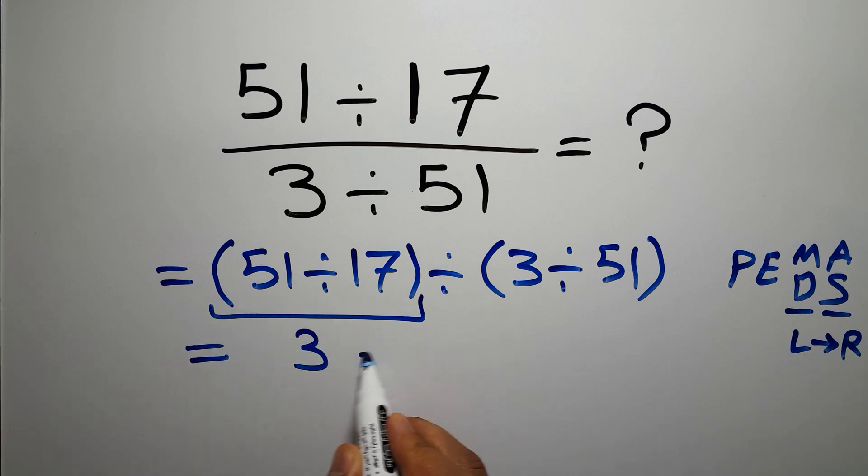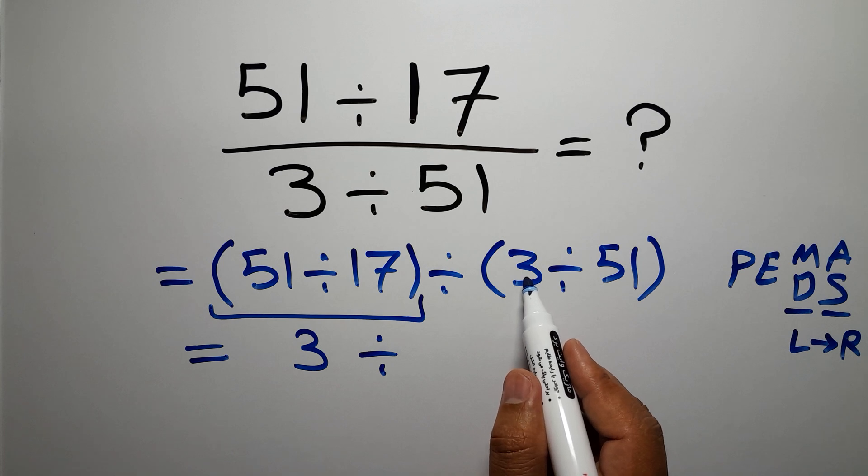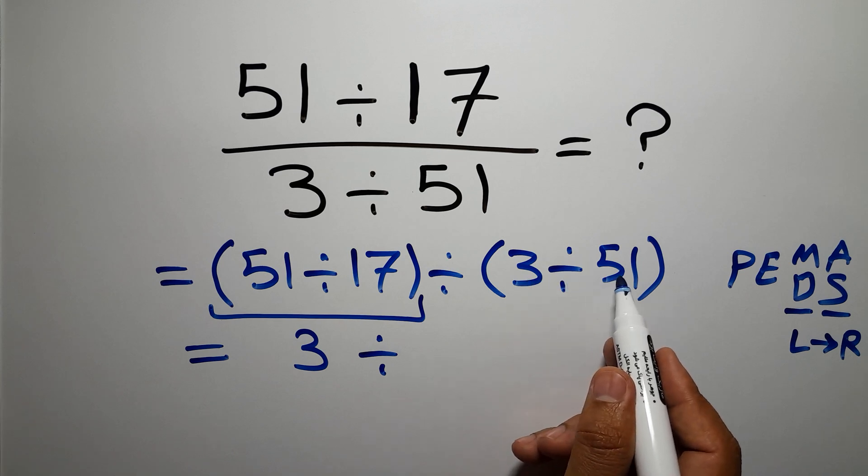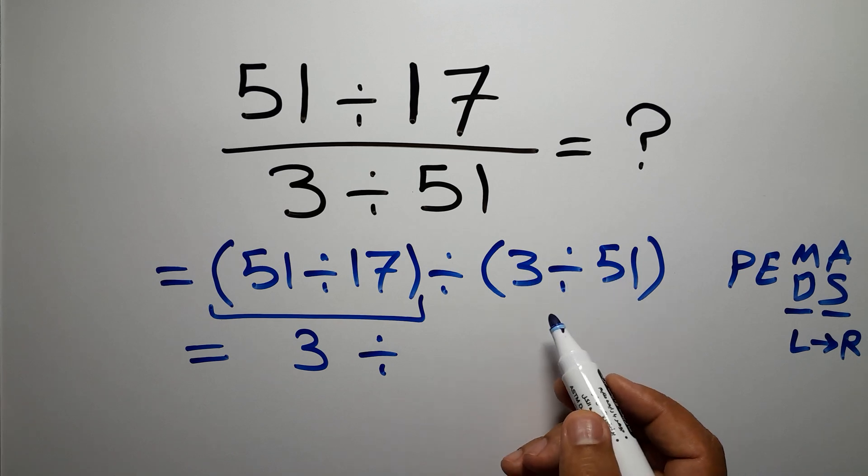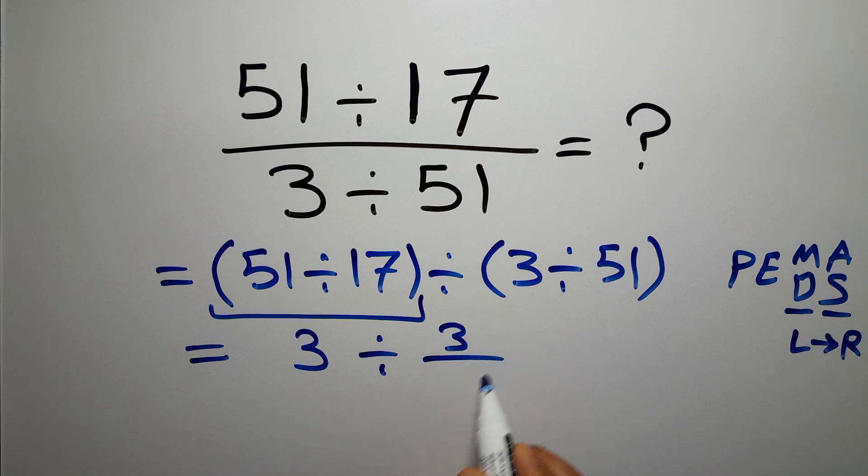So 3 divided by these parentheses. Inside these parentheses, we have 3 divided by 51. We can write 3 over 51.